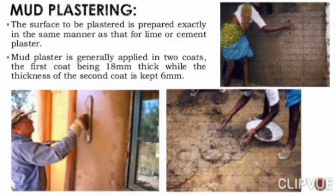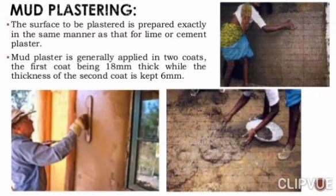The surface to be plastered is prepared in the same manner as that for lime or cement plaster. Mud plaster is generally applied in two coats: the first coat being 18 mm thick, while the thickness of the second coat is kept at 6 mm only.